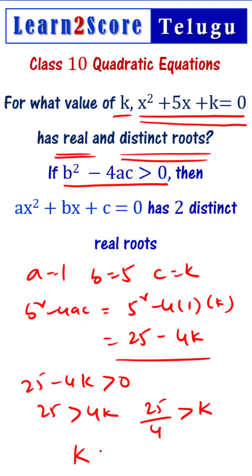Further rearranging, k is less than 25/4. For k values less than 25/4, the equation has real and distinct roots.